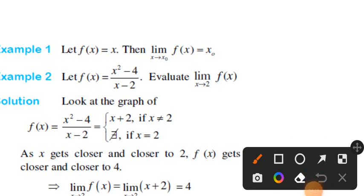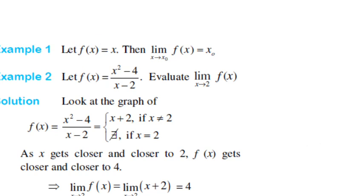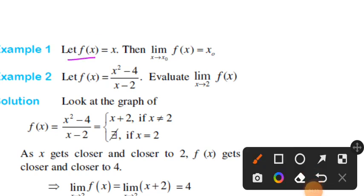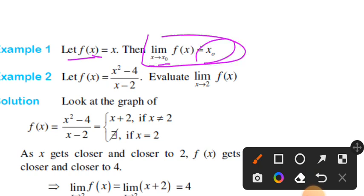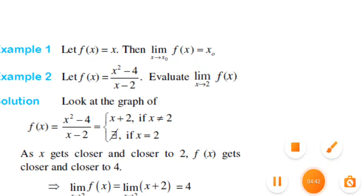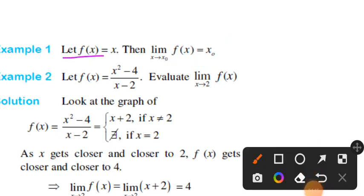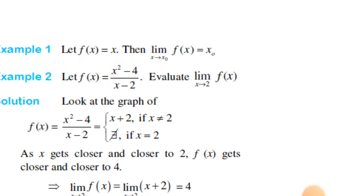Let f of x be equal to x, where x is the independent variable. The function f of x has a variable x defined. Then the limit of f of x as x goes to x-naught is equal to x-naught. As x approaches x-naught, the function value approaches x-naught as well.